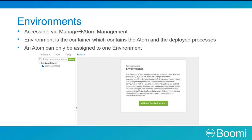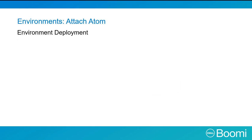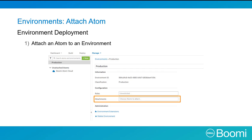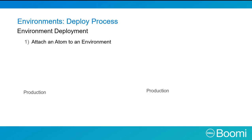Within the environments, we attach to a specific Atom to control the process runtime. The Boomi Atom Cloud is not attached to an environment yet, so it is listed as unattached in the Attached Atoms list. Once the environment is set up, we need to attach an Atom to the environment. Within the Manage Atom Management tab, we can attach an Atom to an environment via the Environment pane. Simply highlight the environment and click the Atom from the Attachments as displayed here. The Atom is now attached to an environment, so we can attach a process to those same environments.